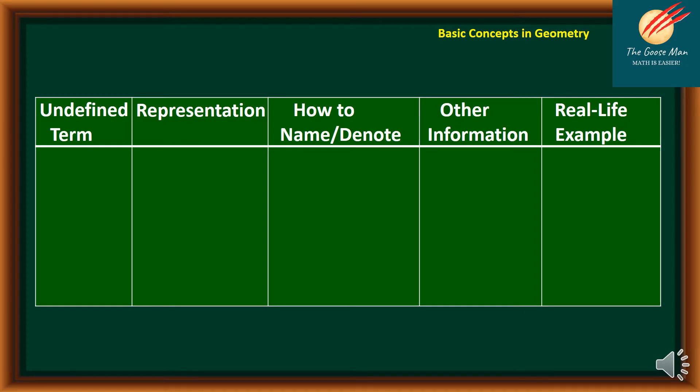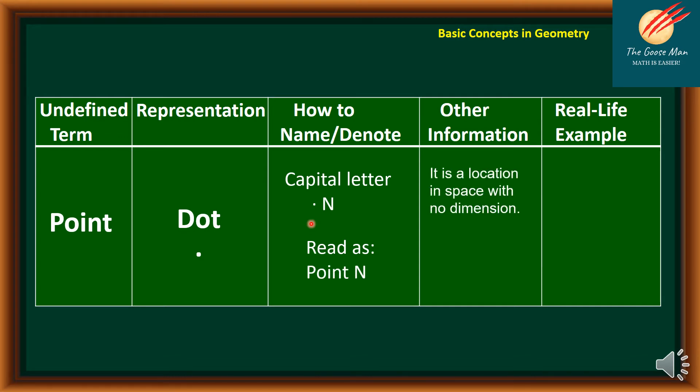So let's have the first definition of terms. We have the point. To represent the point, we have the dot, or this simply is a symbol. And how to name or denote this? We have the capital letter N, so we read this symbol as point N. For other information, this is a location in space with no dimension.